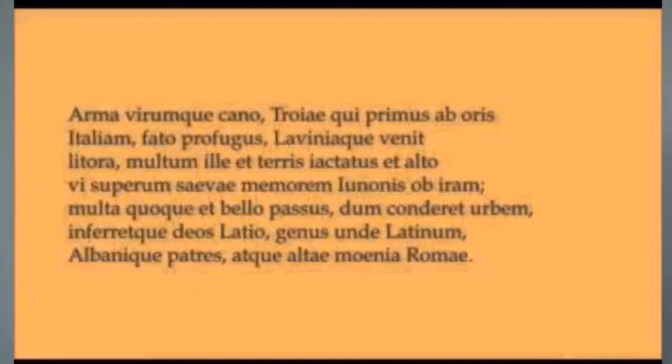Arma virumque cano, Troiae qui primus ab oris Italiam fato profugus, Laviniaque venit litora — multum ille et terris iactatus et alto vi superum, saevae memorem Iunonis ob iram; multa quoque et bello passus, dum conderet urbem inferretque deos Latio, genus unde Latinum Albanique patres atque altae moenia Romae.